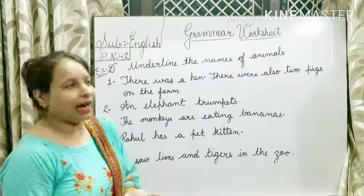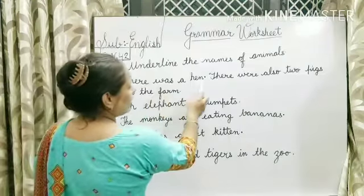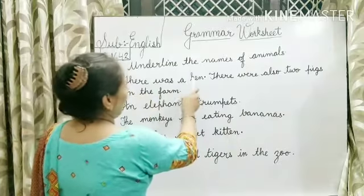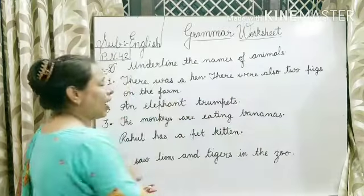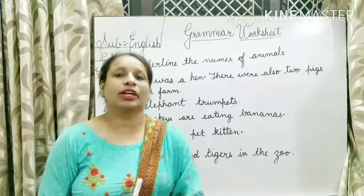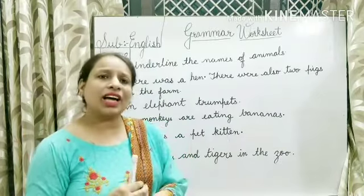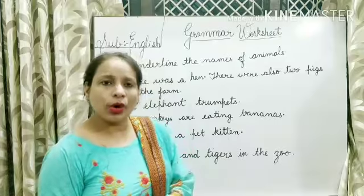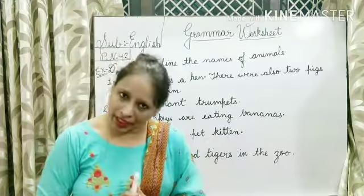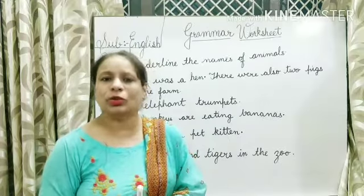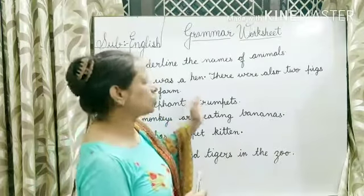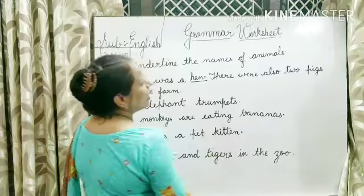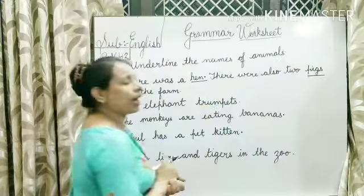First one: there was a hen, and there were also two pigs on the farm. Iska Hindi — ek hen thi, aur wahan pe do pigs baithe the farm ke upar. Ek baat clear samajh lijiye — jo birds hain, the birds are also included in the animals. Ye aerial animals hote hain jo hawa mein udte hain. Toh hen jo hai, ye bird hai lekin this is also an animal. So hen underline karo aur pigs underline karo.